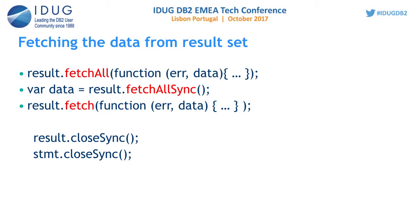Once you are done with query execution, you need to free the memory allocated for the execution of that query. It is recommended to call result.closeSync and statement.closeSync APIs. result.closeSync frees the memory for the result object on which we called the execute or prepare API.